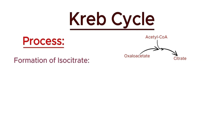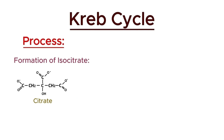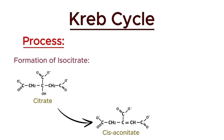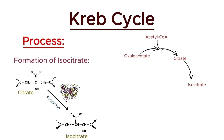In the second step of the Krebs cycle, citrate undergoes a rearrangement to form isocitrate. This reaction is catalyzed by the enzyme aconitase. Citrate is first converted to an intermediate called cis-aconitate through the removal of a water molecule. Then, water is added back to this intermediate to form isocitrate. This step is crucial as it prepares the molecule for the subsequent oxidative decarboxylation.